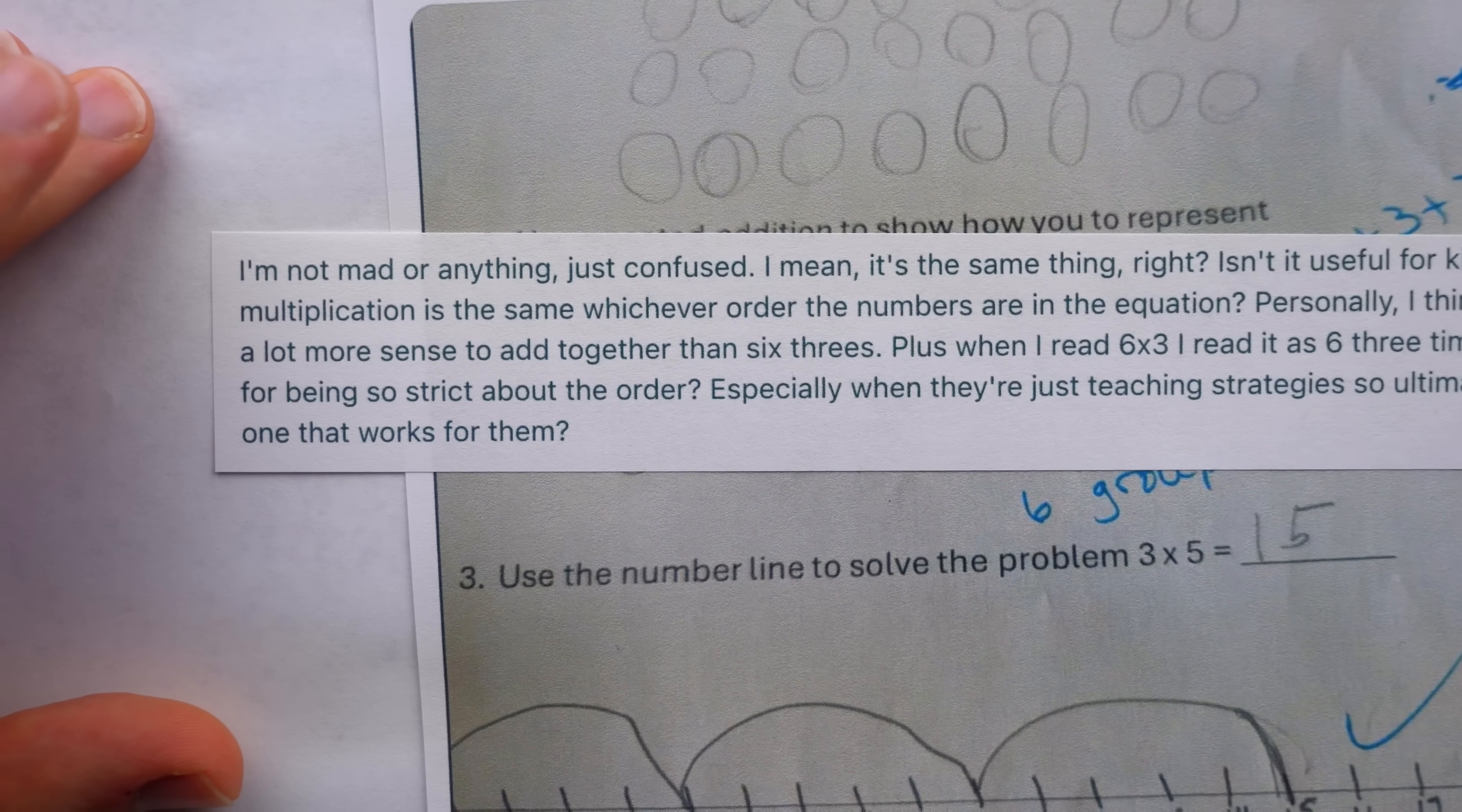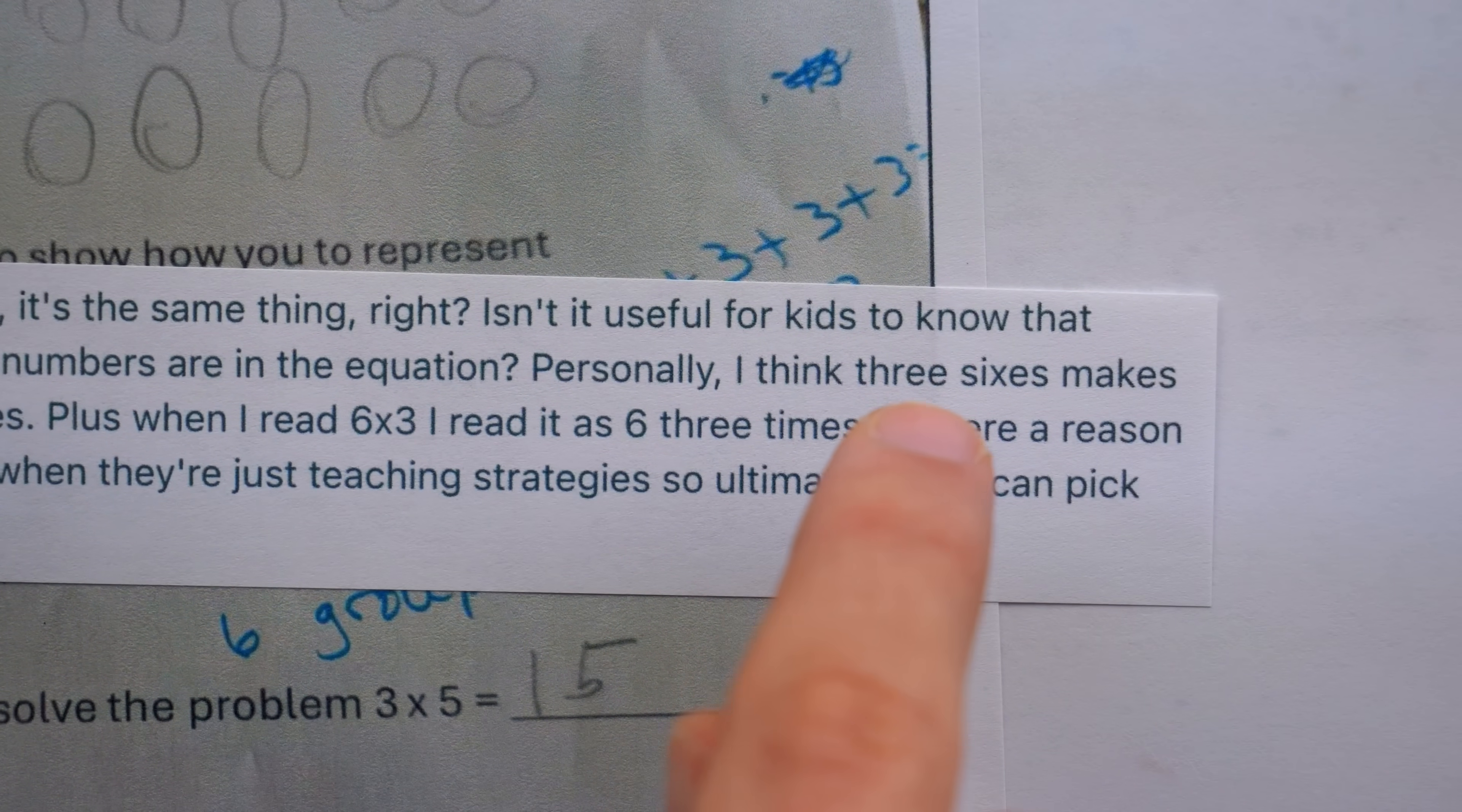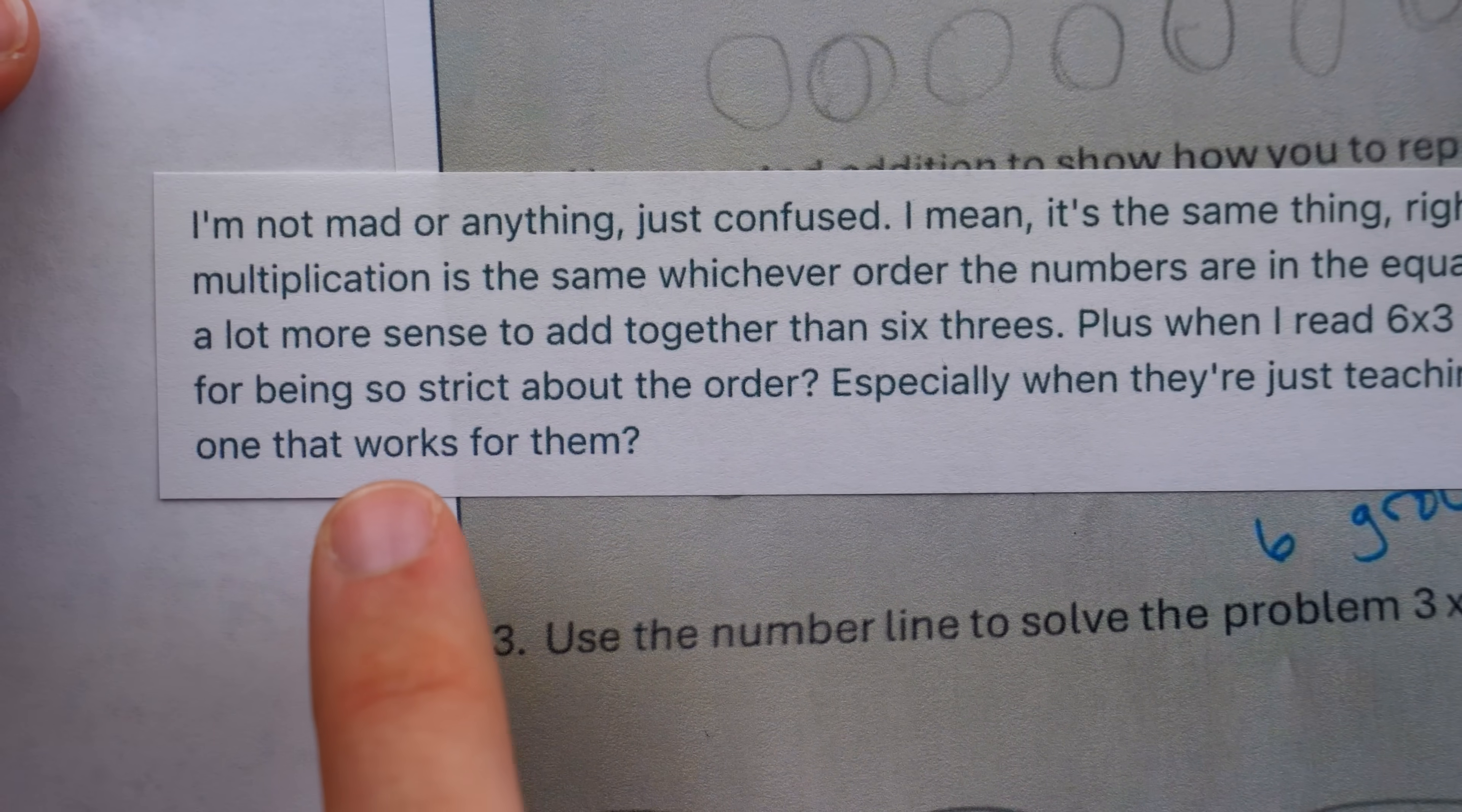The OP said, I'm not mad or anything, just confused. I mean, it's the same thing, right? Isn't it useful for kids to know that multiplication is the same whichever order the numbers are in the equation? Personally, I think 3 sixes makes a lot more sense to add together than 6 threes. Plus, when I read 6 times 3, I read it as 6, 3 times. Is there a reason for being so strict about the order, especially when they're just teaching strategies, so ultimately they can pick one that works for them?